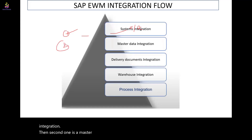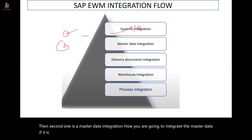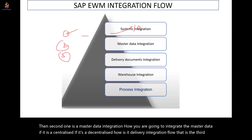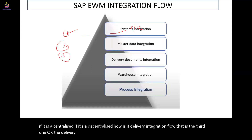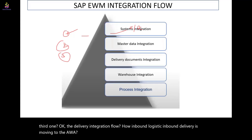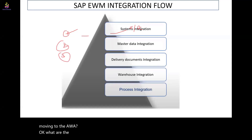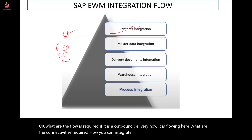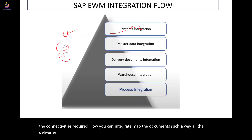The second step is master data integration — how you are going to integrate the master data, whether it is centralized or decentralized. The third one is the delivery integration flow: how inbound logistics and inbound delivery move to EWM, what flows are required for outbound delivery, what connectivities are required, and how you map the documents so that all deliveries flow smoothly to EWM without errors.